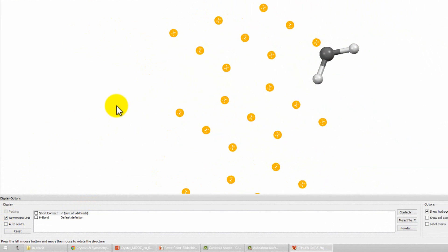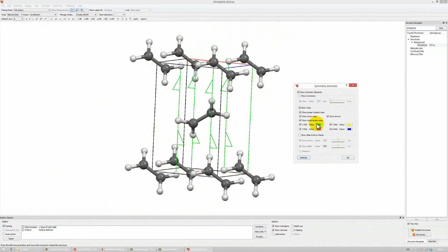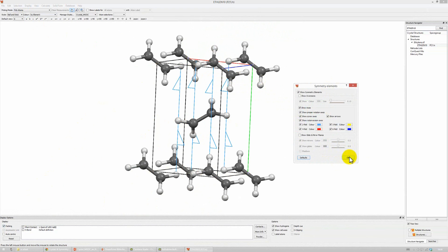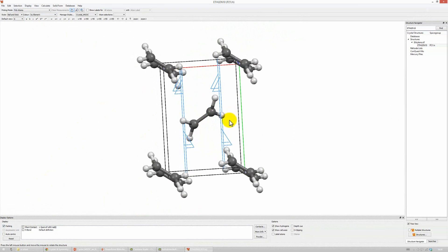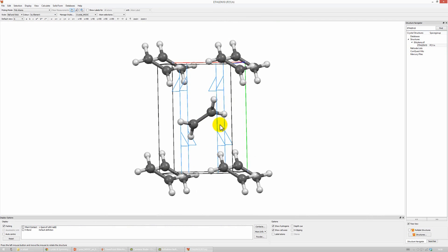Okay, let's explore the other remaining symmetry elements. Let's choose the 2₁ screw axes. And I prefer a blue color for them. Alright, here they are. So, we have four 2₁ screw axes, which are running parallel to the b direction.